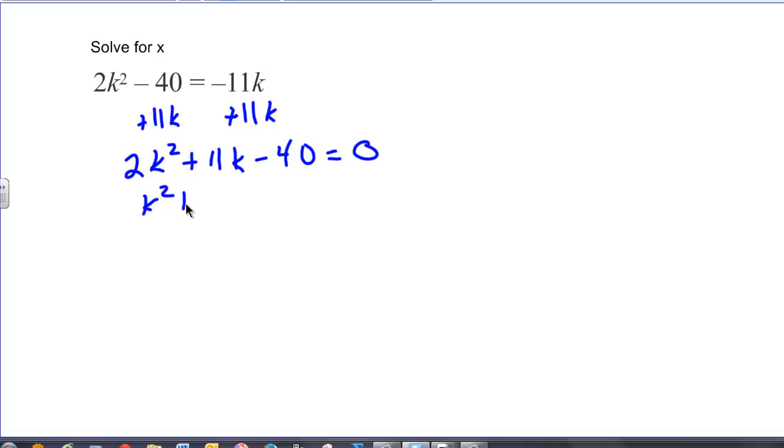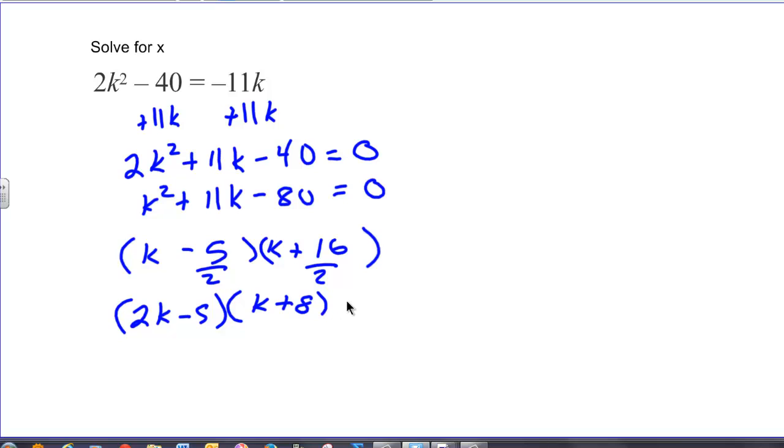Get k squared plus 11k minus 80 is equal to 0. I want to find 2 numbers that multiply to 80 and add or subtract to 11. It's going to be k minus 5 and k plus 16. Divide both by the initial multiple. I get no reduction here so this goes to 2k minus 5. It's still equal to 0. Use my zero product principle.